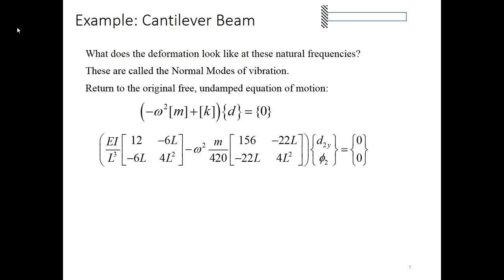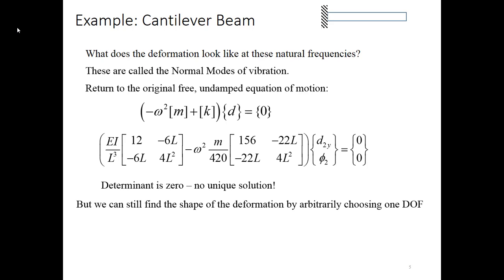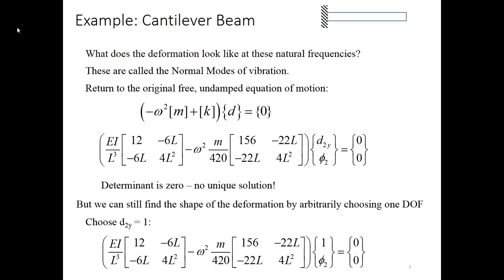We plug in the omegas that we now know and we solve for the corresponding d. But notice that we have, we know that the determinant is zero. In fact, we found omega to make sure the determinant was zero. Because the determinant is zero, we can't solve for d2y and phi2. There is no unique solution by definition of the determinant being zero. But what we can do is choose one of these to be some fixed value. And then we can use the other to find the shape of the deformation. So let's go ahead and choose d2y to be equal to one. So now the equation that I'm going to solve is shown here. I'm going to solve this for phi2. And in fact, I can use either of the two equations to solve, because they're both going to give me the same response for phi2. By the two equations, of course, I mean the two rows. Remember this is a matrix equation. So there are two scalar equations associated with it.